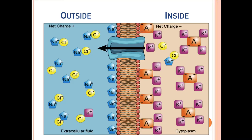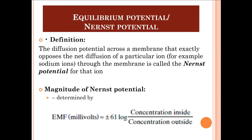For example, a potassium ion is trying to move outside. After some time, forces will be generated that oppose the movement of potassium from inside to outside, blocking that movement. At that point, the membrane potential is known as the Nernst potential for potassium. The concept of Nernst potential — or equilibrium potential — is where there is no net diffusion of a particular ion from one side to the other, and the magnitude of the Nernst potential can be determined by the Nernst equation.